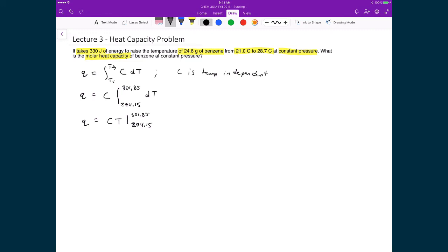And so, in this case, I can actually start substituting in values, and I can evaluate this using the fundamental theorem of calculus. So, as we saw in the problem, we put in 330 joules of energy, I have my heat capacity, and then I have my difference in temperature. And so, what I end up with in the end is a heat capacity that's equal to 42.86 joules per Kelvin.